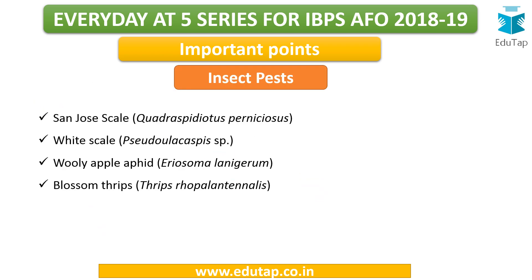Important insect pests affecting apple include: San Jose scale, white scale, woolly apple aphid, and blossom thrips. These pests affect the quality of the apple fruit crop.